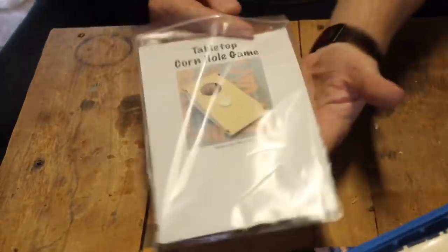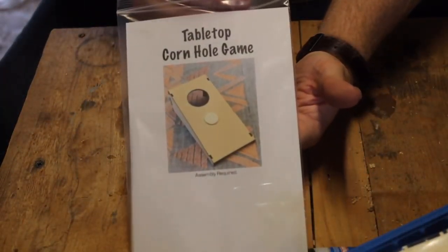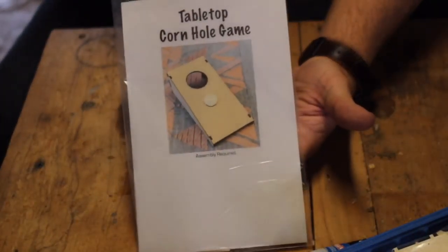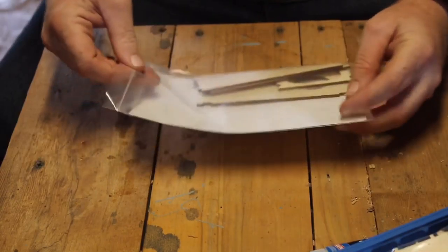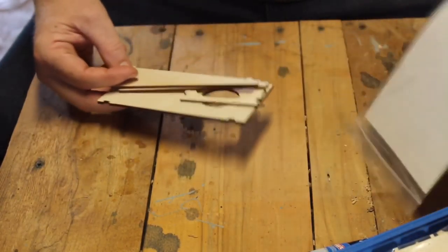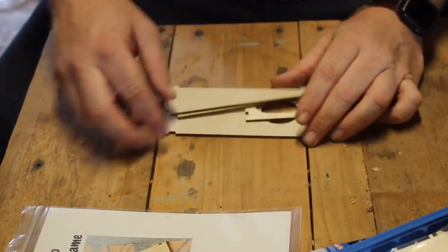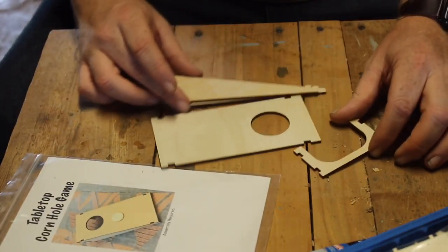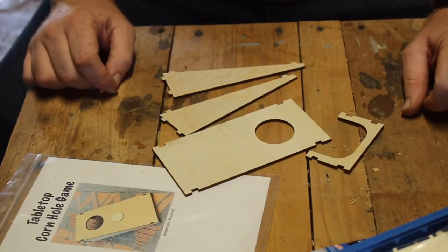All right guys, here is the cornhole game. I know there's no directions because you need to just stop by here on YouTube and we'll show you how to do it instead of trying to have you read directions that are inevitably never correct, no matter how hard I try. This is an easy one. There's only four pieces to this one.